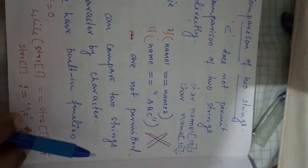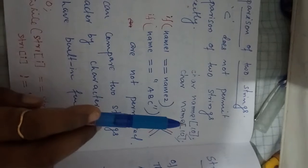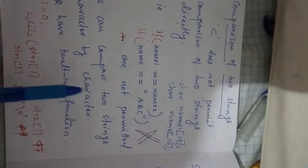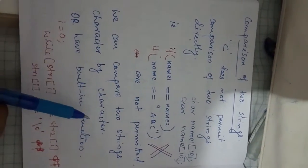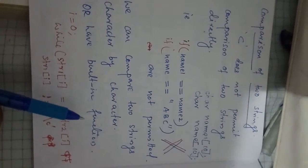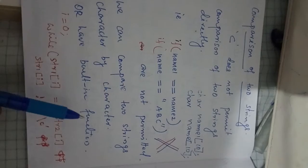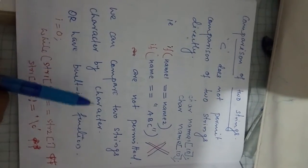We can compare strings character by character. We know that in a character array, each character has an index. So index by index, or character by character, we can compare two strings. Alternatively, C provides many built-in functions which we will discuss in the next topic.